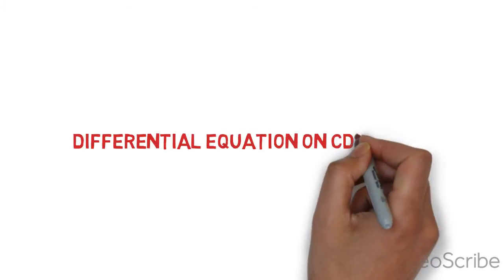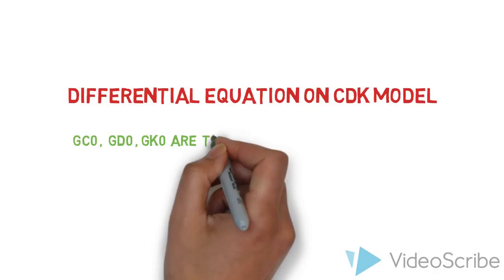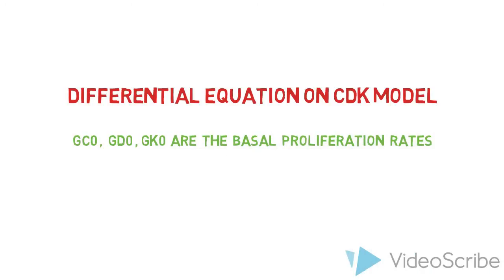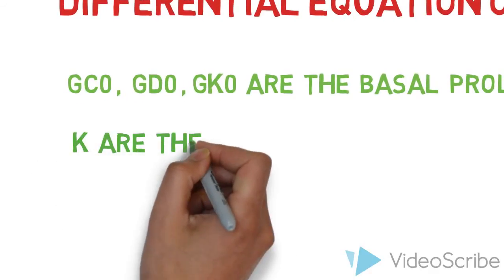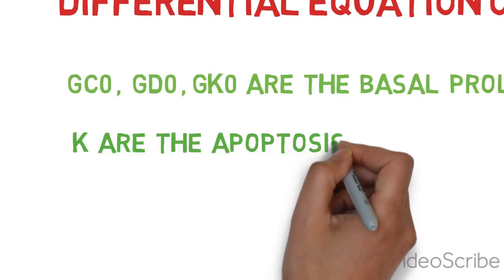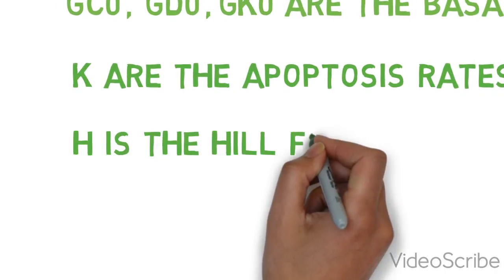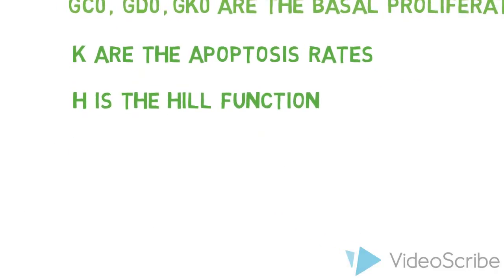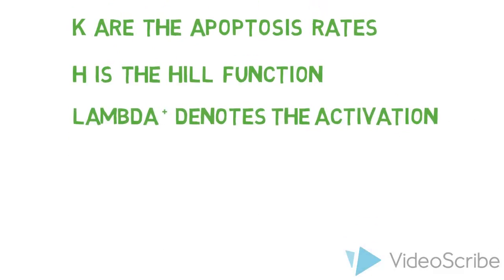We are talking about the parameters of the differential equation on CDK model. Gc0, Gd0 and Gk0 are the basal proliferation rates. Kc, Kd and Kk are the apoptosis rates. And the H is the Hale function, where the lambda plus denotes the activation and lambda minus denotes the inhibition.